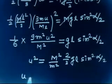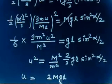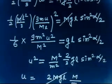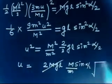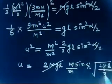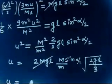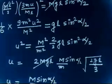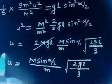Taking the square root, the initial velocity of the bullet is: U = (M/m)·sin(alpha/2)·√(2gL/3). This is the answer to part A.